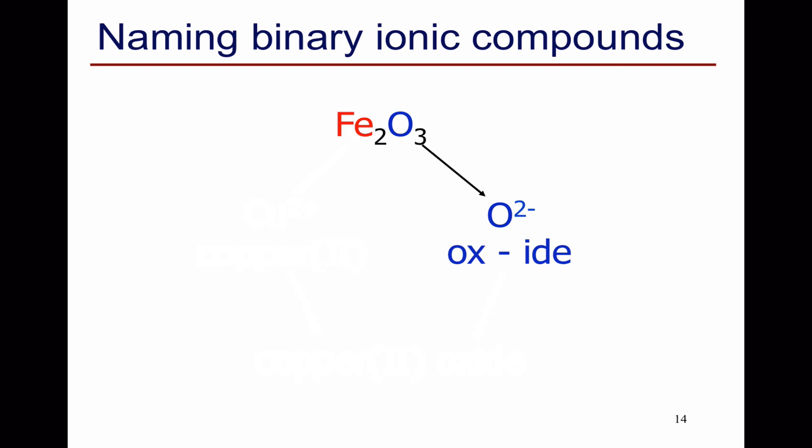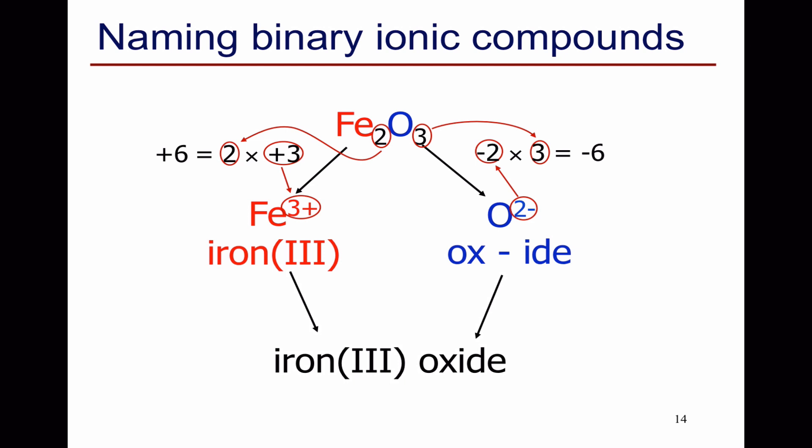One last example of an ionic compound, and a quite tricky one. Fe2O3. We've got three O2-. So the overall negative charge from the anions is -2 times 3 is -6. We have two ions. So to balance the charge of the anions, we must have two iron3+ to give 2 times +3 is an overall positive charge of +6. So we've got iron3+, iron(III). So the name of the compound is iron(III) oxide.